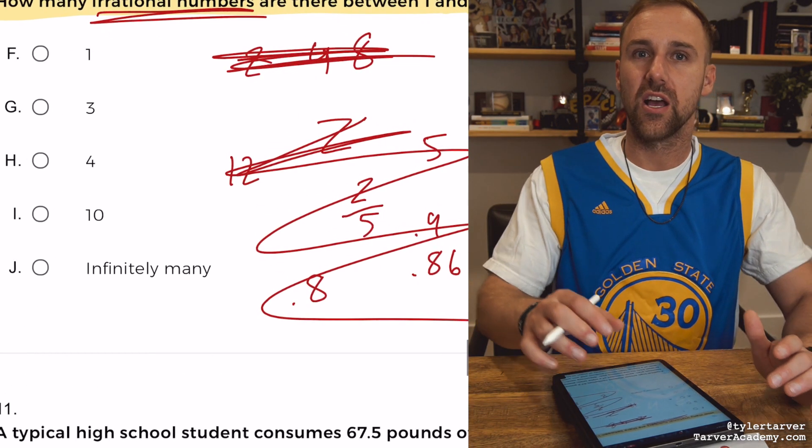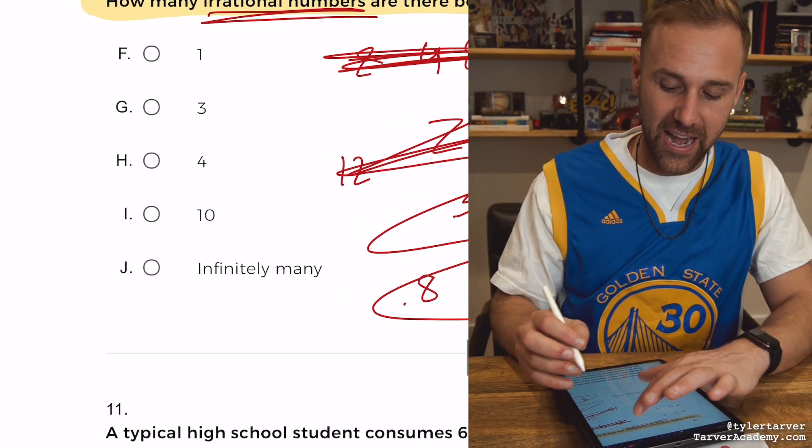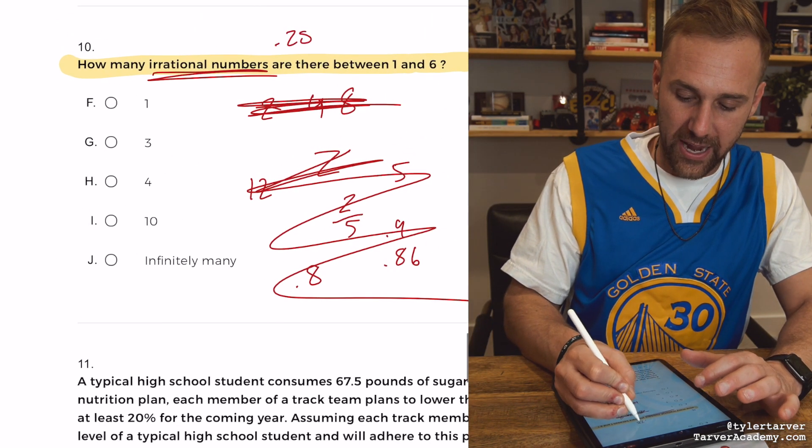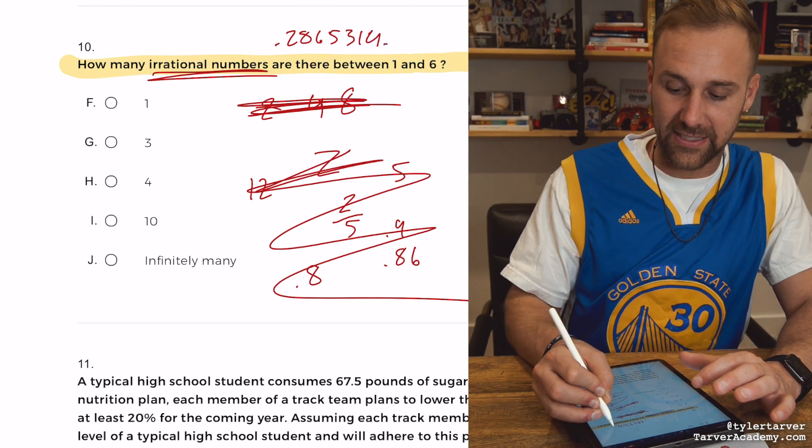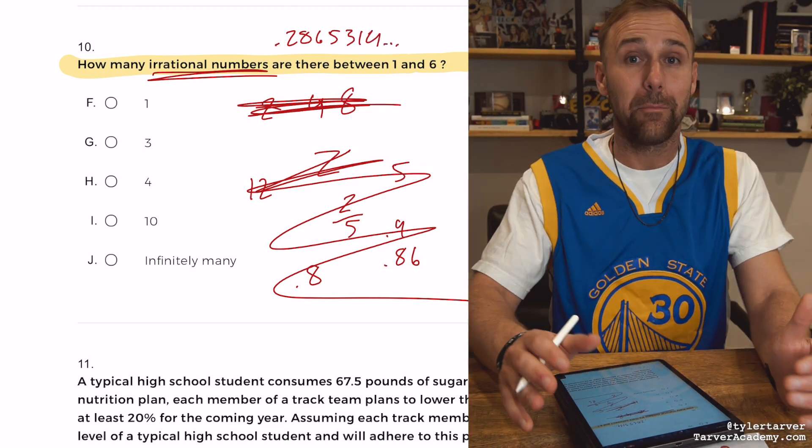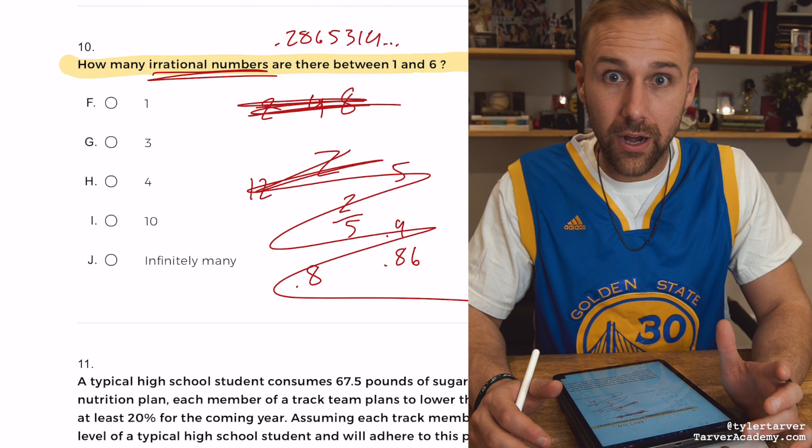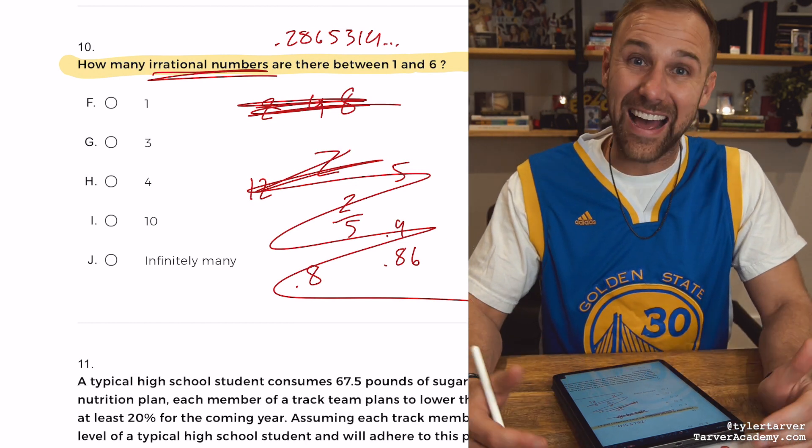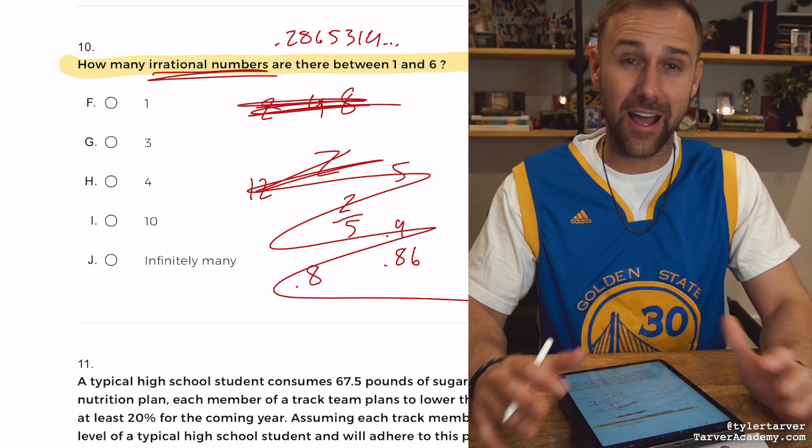Irrational numbers, they're crazy. They never stop. Point two, eight, six, five, three, one, four. And you're just like, that's too many numbers. I quit. Pi. Remember pi? 3.14, apple pie. You got pi. That is an irrational number because it goes on forever.